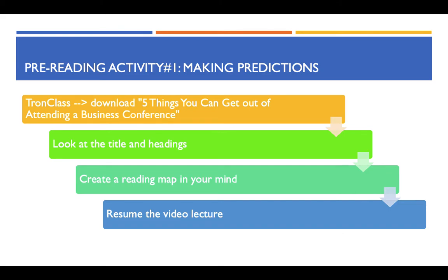Now I would like you to follow these steps. Go to Tron Class and download 'Five Things You Can Get Out of Attending a Business Conference.' Then look at the title and headings — when you look at them, pay attention to nouns, adjectives, and verbs. After you are done with that, you will be able to create a reading map in your mind. Finally, come back to the video lecture to see whether your reading map is the same as mine or not. Please pause the video lecture now to do these steps.